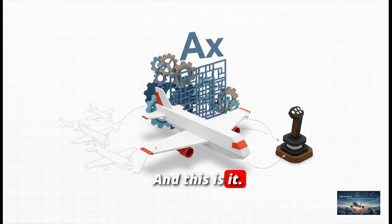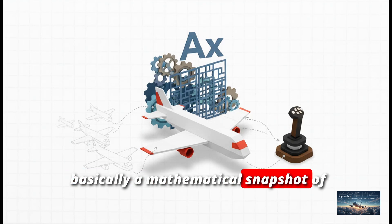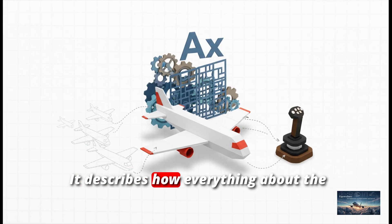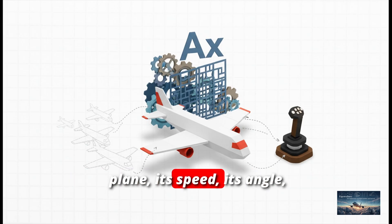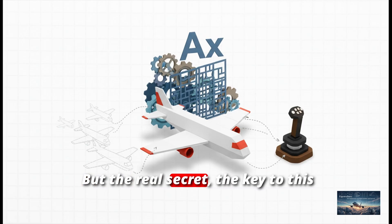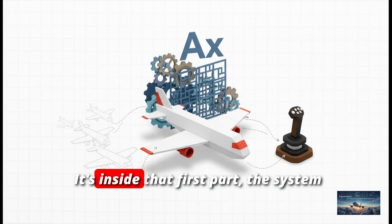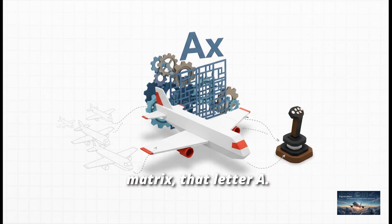And this is it. This neat little equation right here is basically a mathematical snapshot of the plane in flight. It describes how everything about the plane, its speed, its angle, you name it, changes from one moment to the next. But the real secret? The key to this whole thing is hiding in plain sight. It's inside that first part, the system matrix, that letter A.